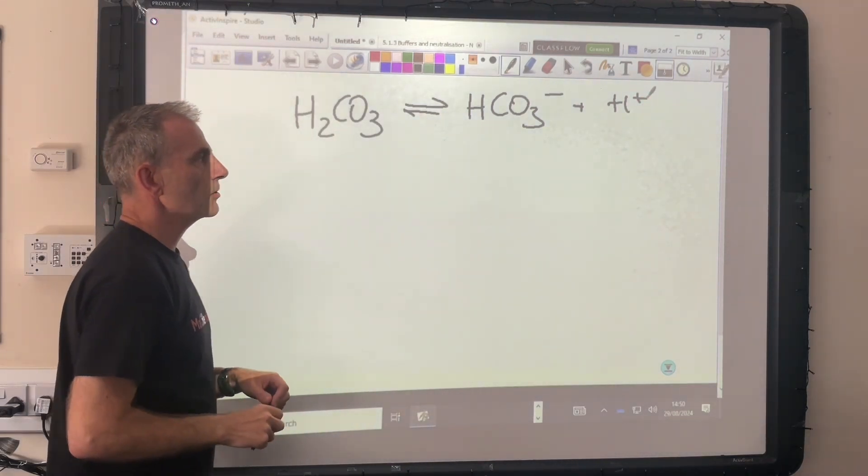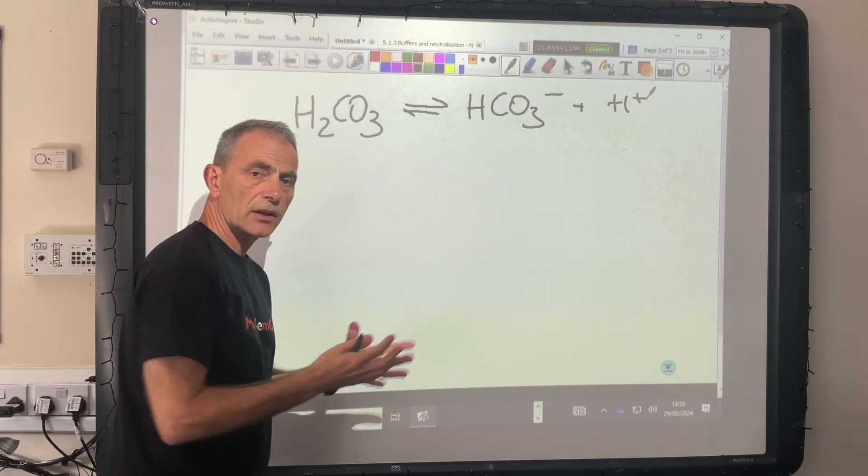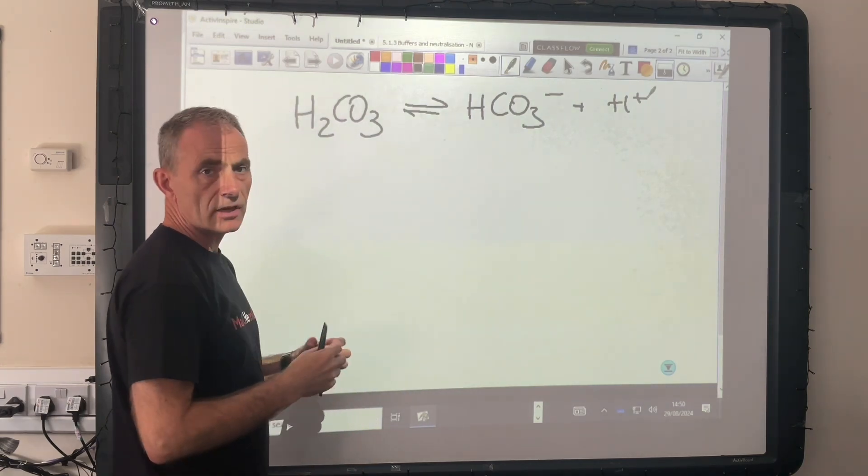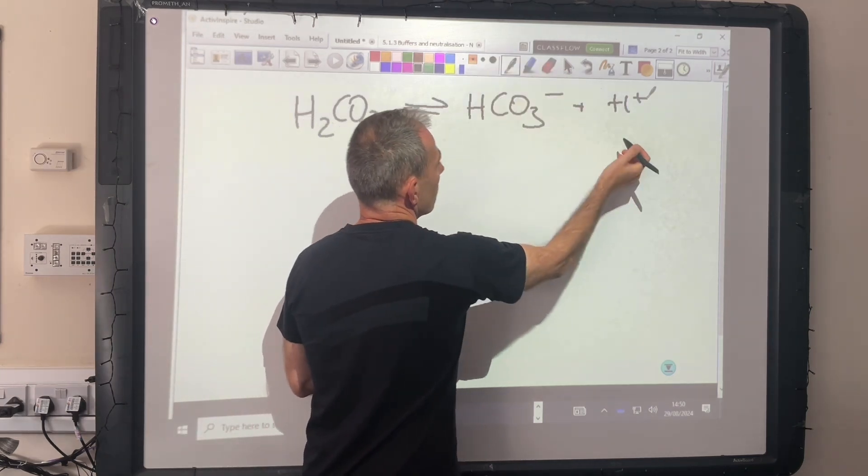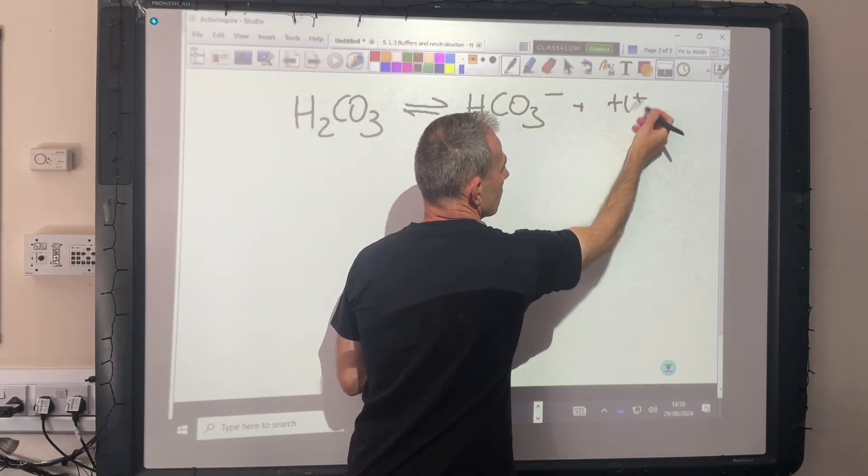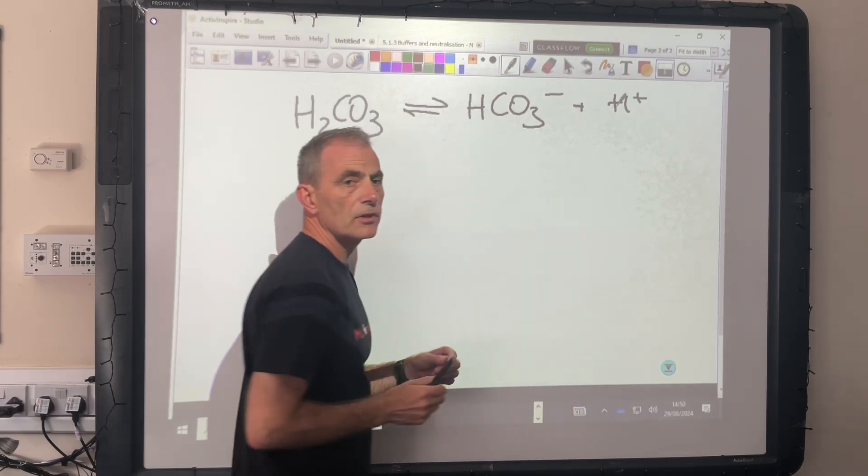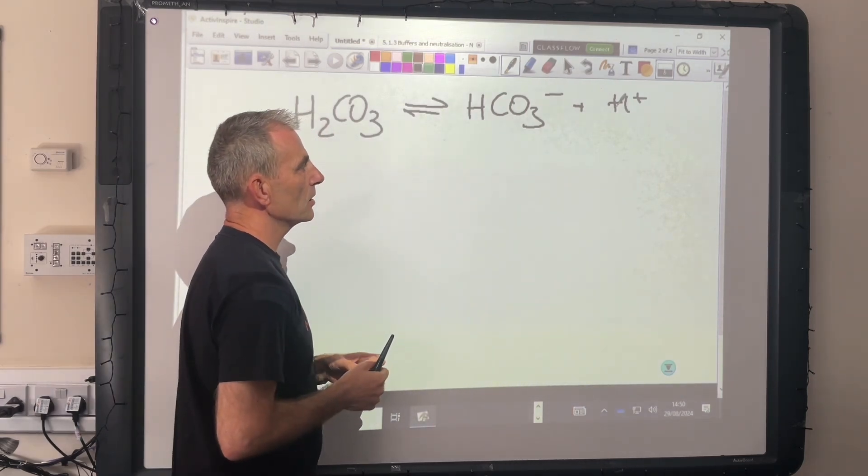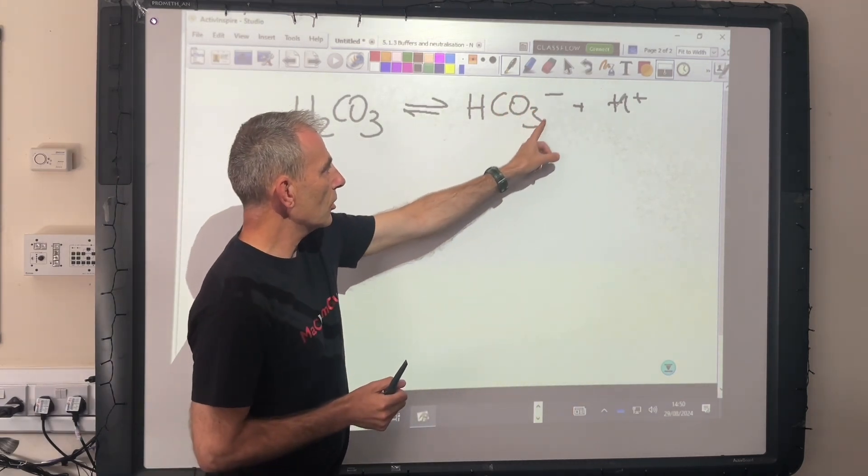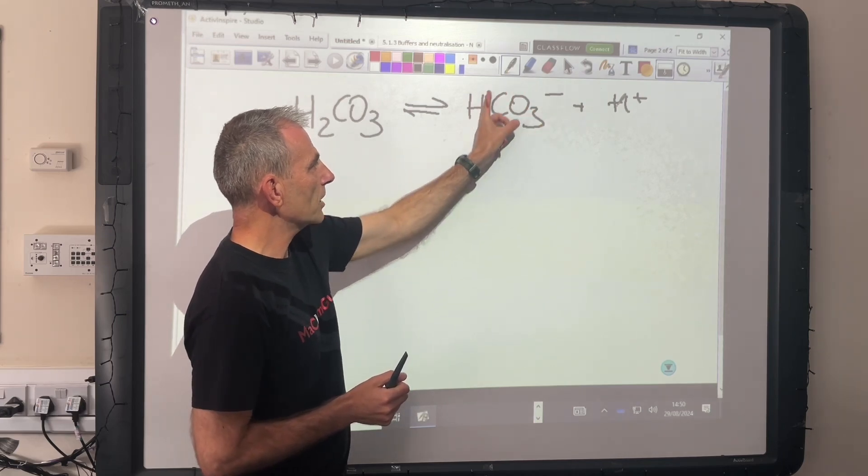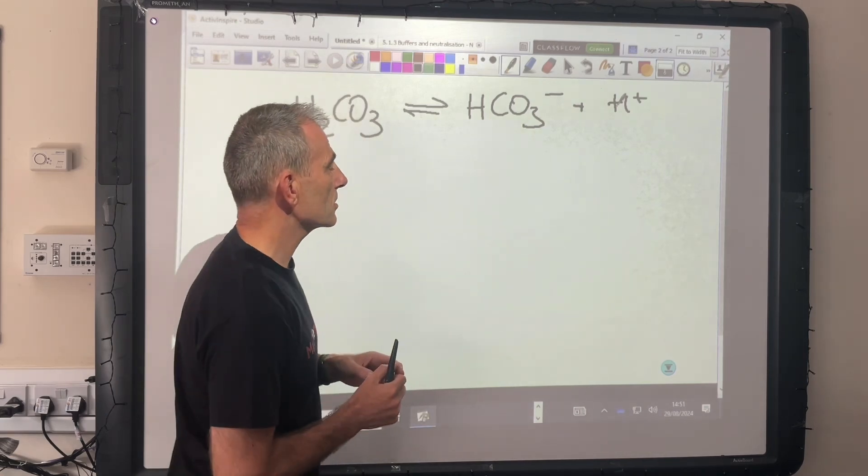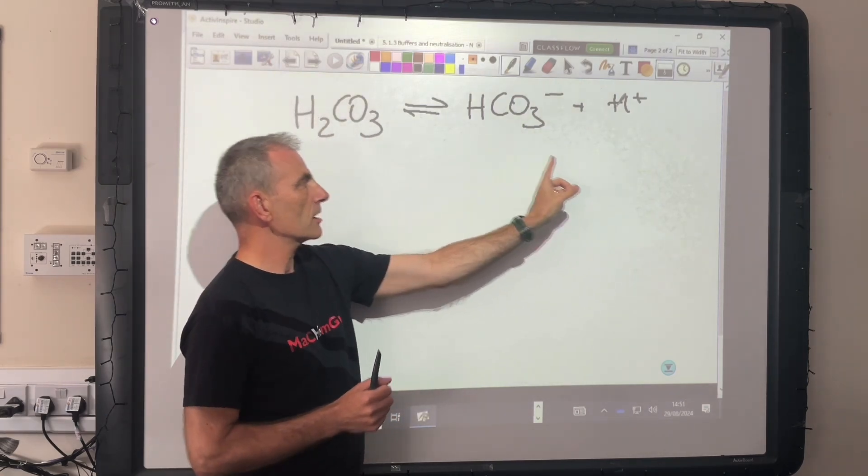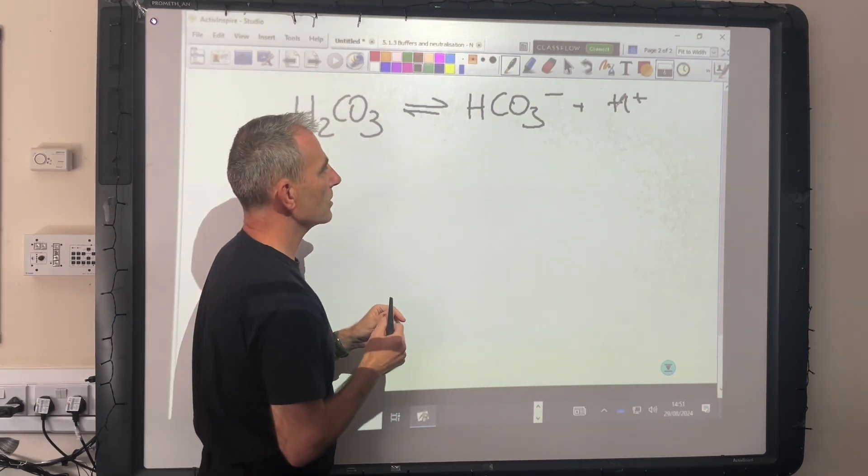Let's imagine H plus ions enter the blood and start to make it too acidic. This concentration of H plus is going to increase. So this store or reservoir of hydrogen carbonate ions is going to react with the extra H plus ions and send the equilibrium system over to the left.